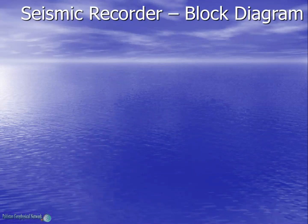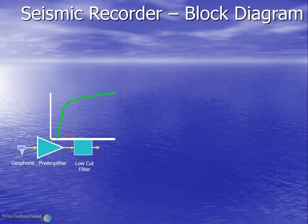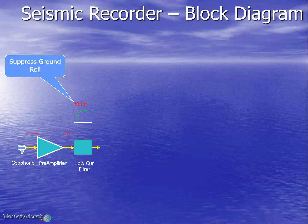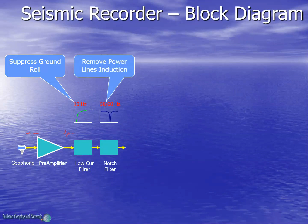The geophone picks weak seismic signals and the pre-amplifier amplifies them. Then we have the low-cut filter with a cut-off frequency of 8 or 10 Hz, which suppresses the ground roll and air wave. Then we have the notch filter, which removes power line induction at 50 or 60 Hz.